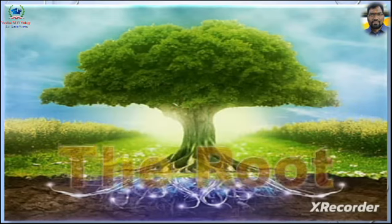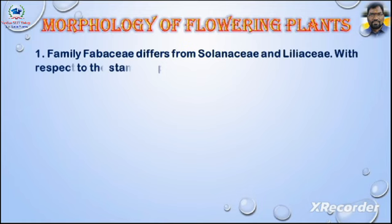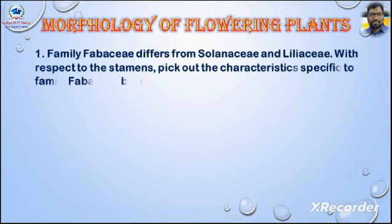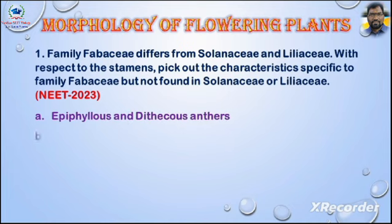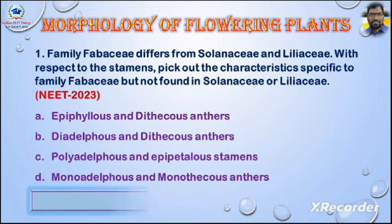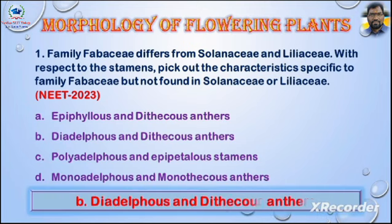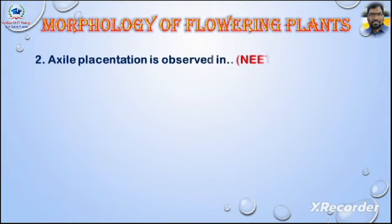Morphology of flowering plants. Question 1: Family Fabaceae differs from Solanaceae and Liliaceae with respect to the stamens. Pick out the characteristic specific to family Fabaceae but not found in Solanaceae or Liliaceae. Asked in NEET 2023. Options: A) epipetalous and dithecous anthers, B) diadelphous and dithecous anthers, C) polyadelphous and epipetalous stamens, D) monoadelphous and monothecous anthers. Answer: Option B — diadelphous and dithecous anthers.